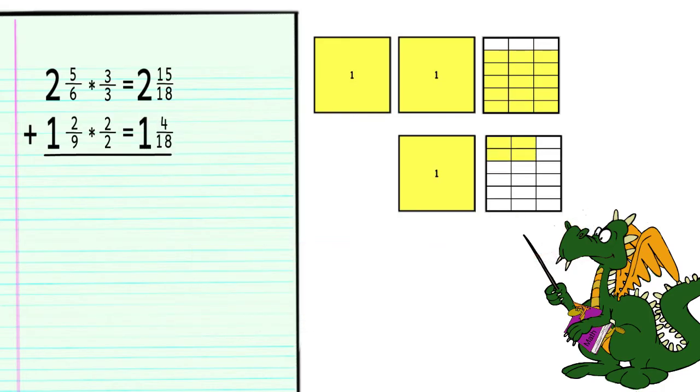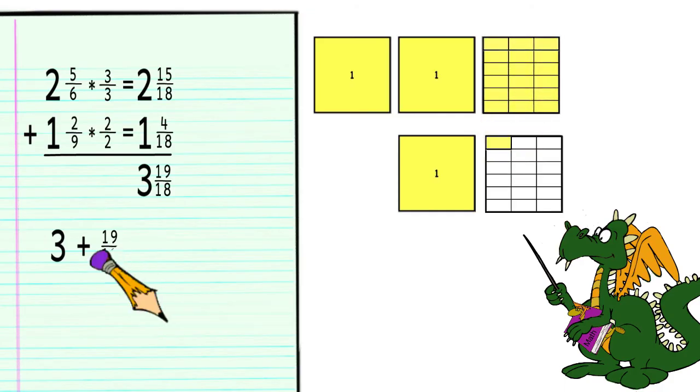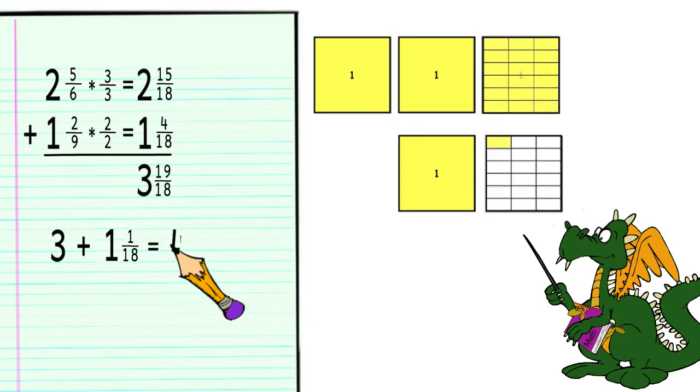When we add those together, we get 3 and 19 18ths. We can think of this as 3 plus 19 18ths. Since 19 18ths is larger than 1, we can write it as the mixed number 1 and 1 18th, and then add that to the 3, leaving us with 4 and 1 18th.